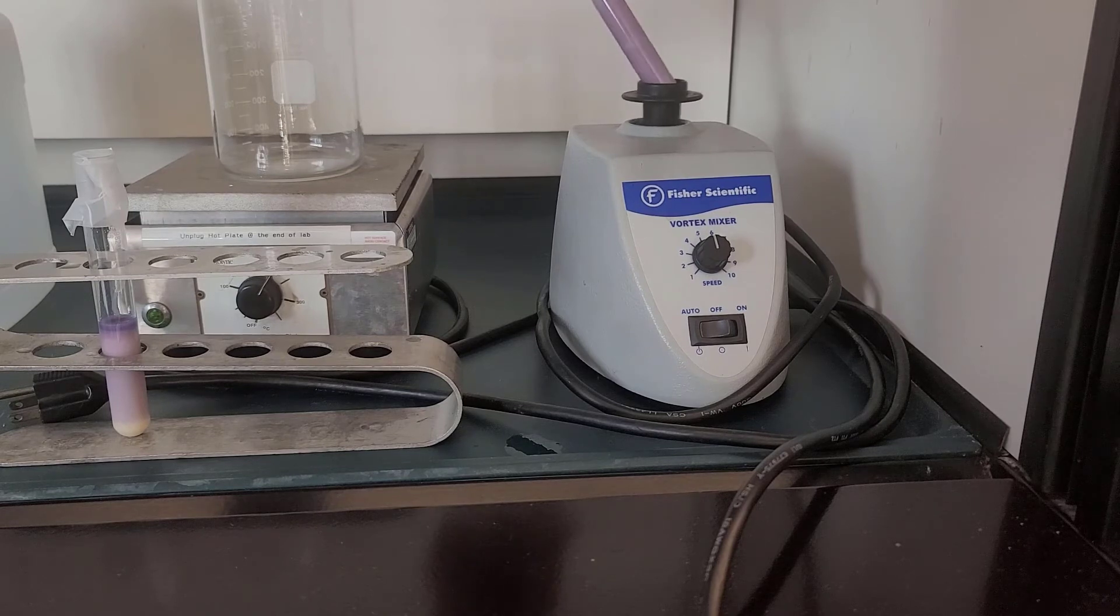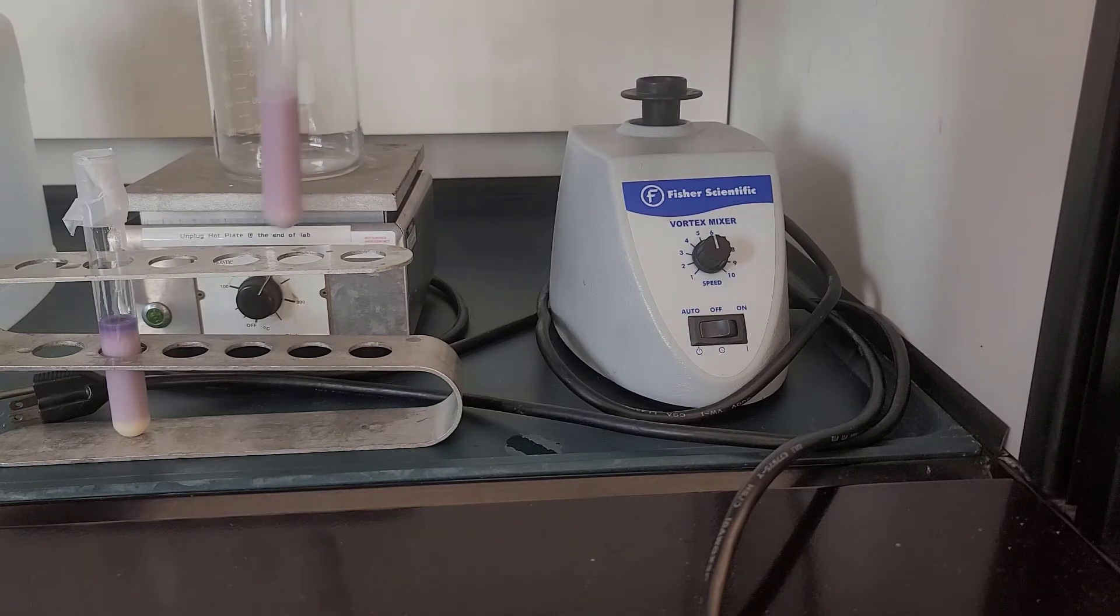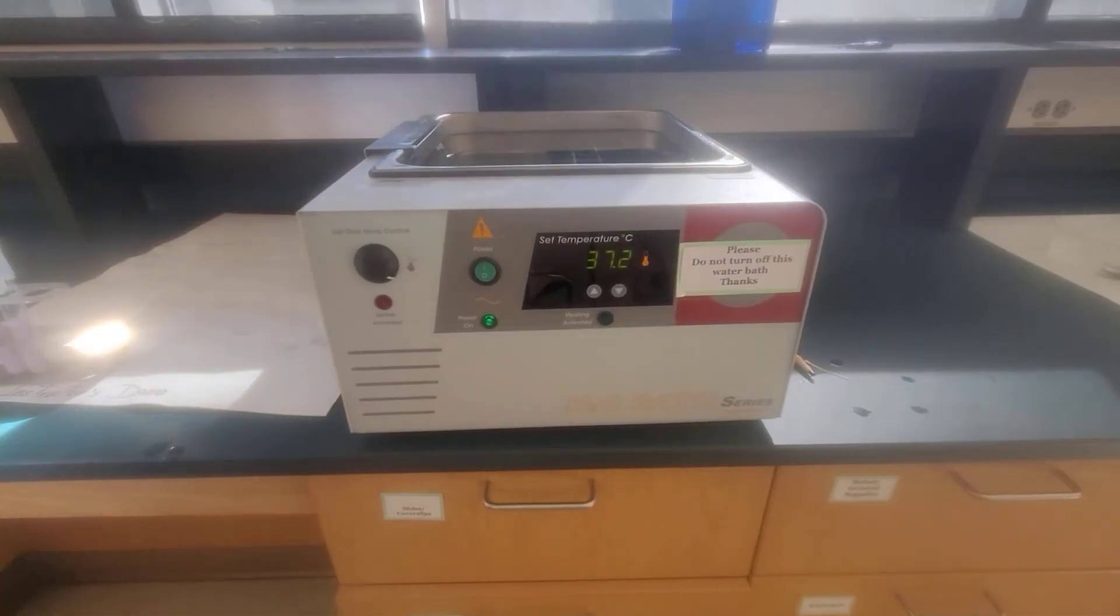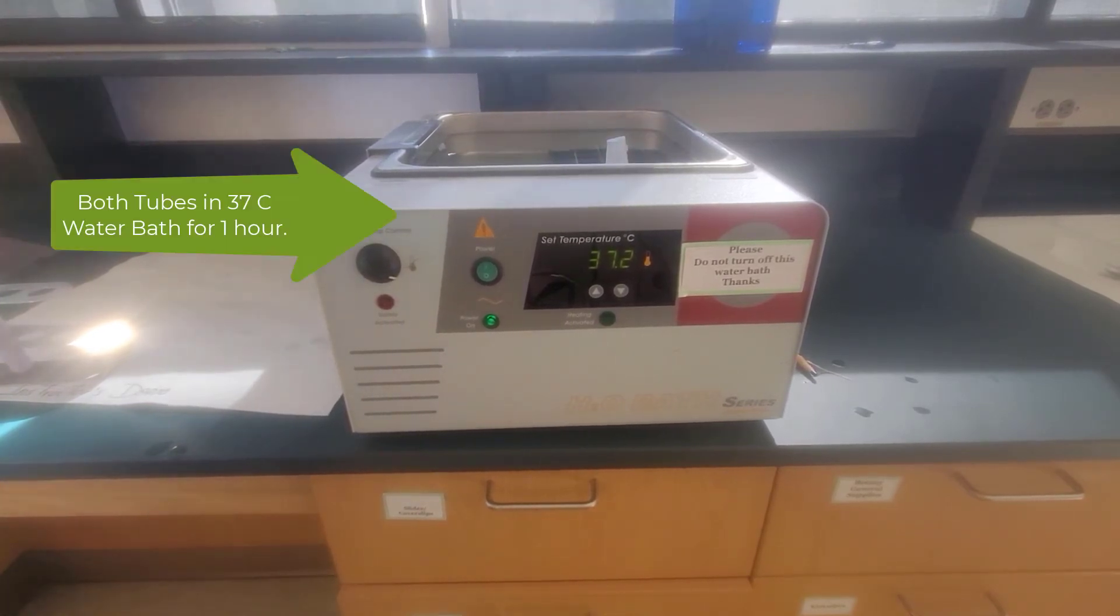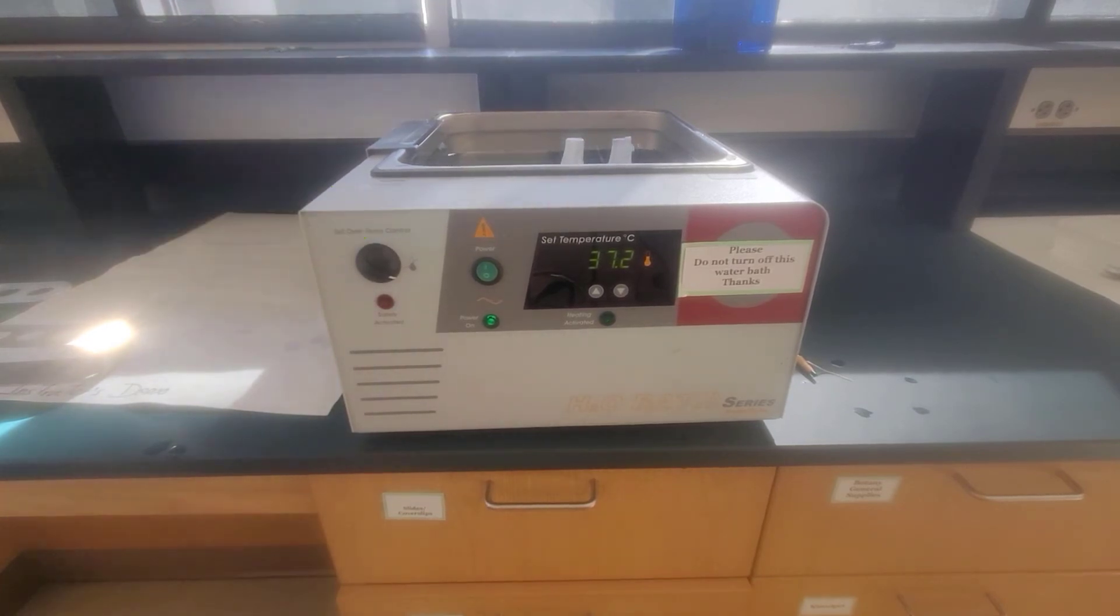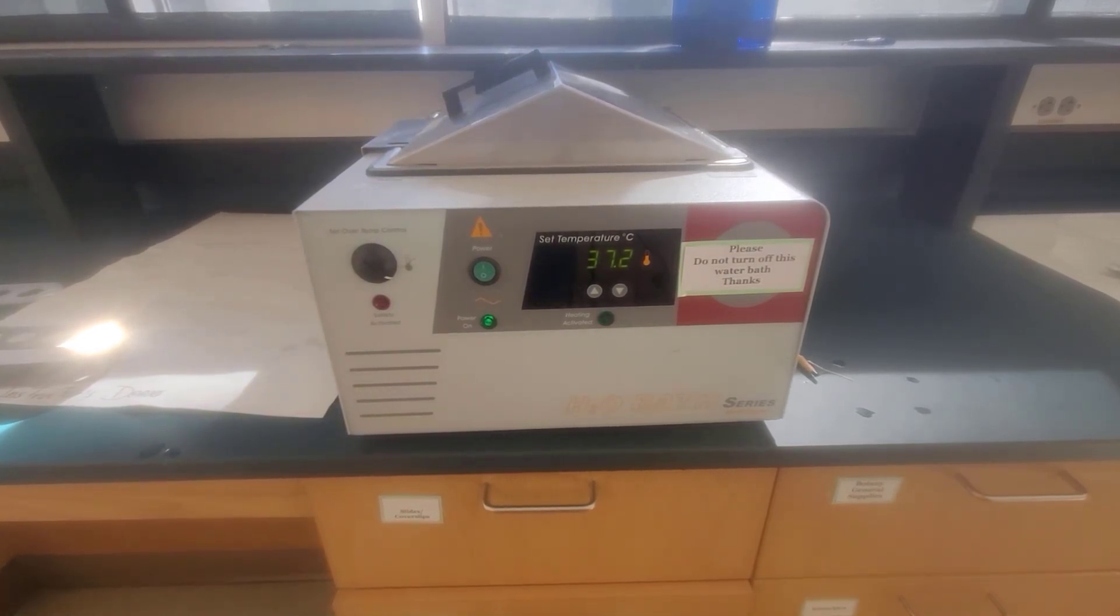And then what we need to do—this experiment takes quite a bit of time. It takes about an hour to run this experiment. So we're going to take tube one and tube two. We're going to place both of these tubes in a 37 degree Celsius water bath. So again, 37 degrees Celsius using the metric system—37 degrees Celsius is about the same as body temperature. So we're going to place both of these tubes in our 37 degree water bath, and they need to sit in there for about one hour.